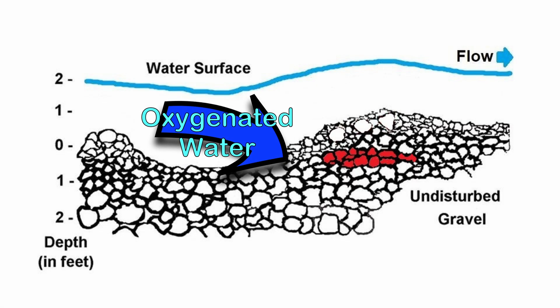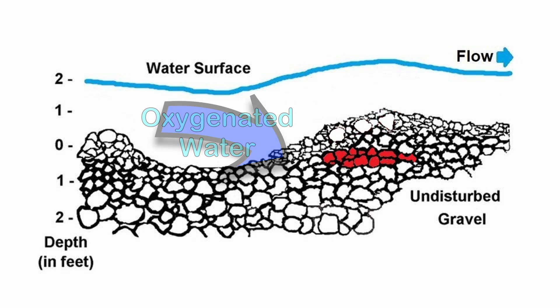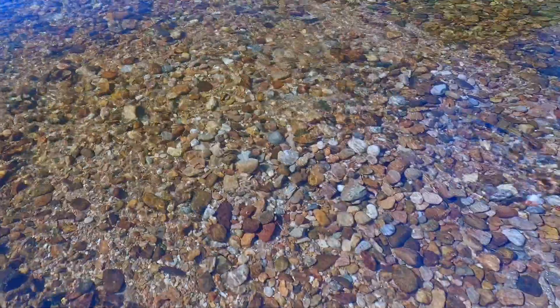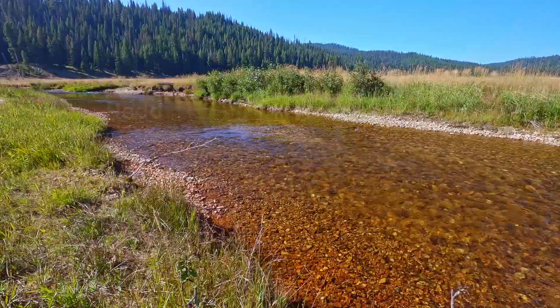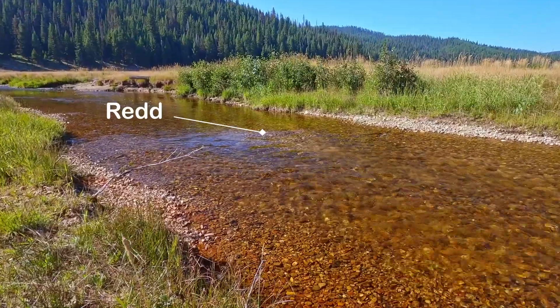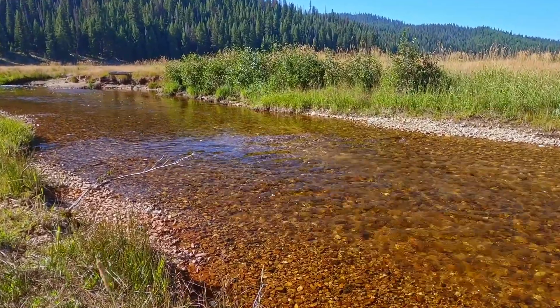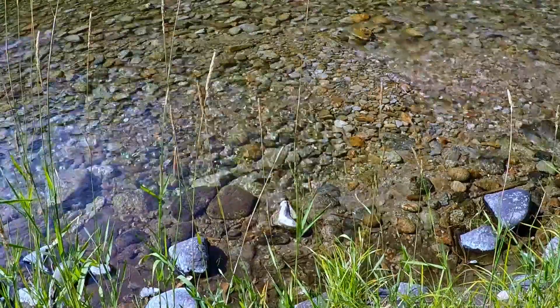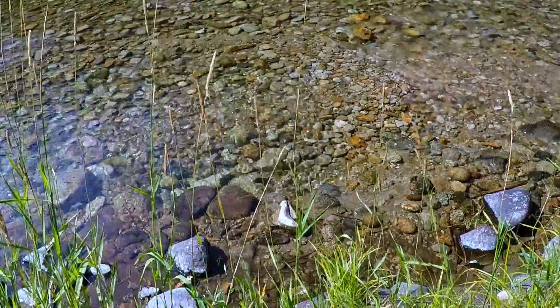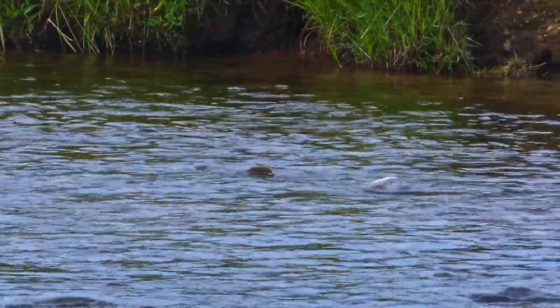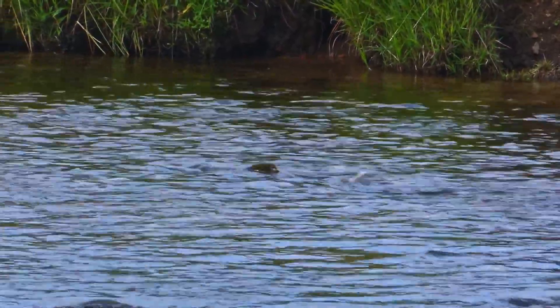Reds are usually located where there is sufficient flow to force oxygenated water through the gravels to reach the eggs. Generally, they are located towards a downstream portion of pools and runs just upstream of the riffle. Reds can also be located along a stream bank. Surveyors often detect a red's presence by observing partially exposed fish working ahead of them.